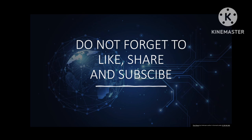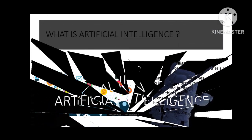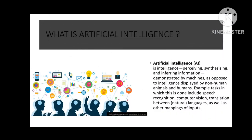Let's start the series. The first topic is: what is artificial intelligence? Artificial intelligence is the processing, synthesizing and demonstrating of intelligence by machines, as opposed to intelligence displayed by humans, animals and other tasks. Examples of tasks where this is done include speech recognition and computer vision.